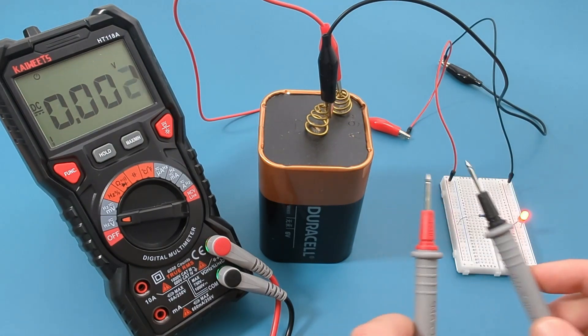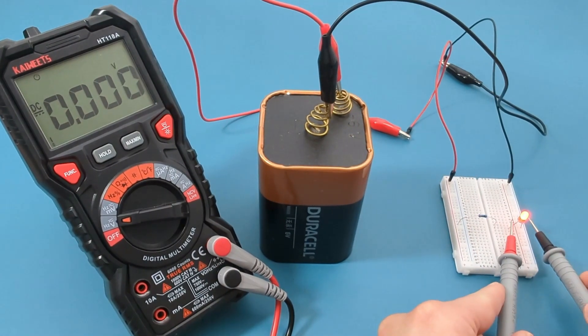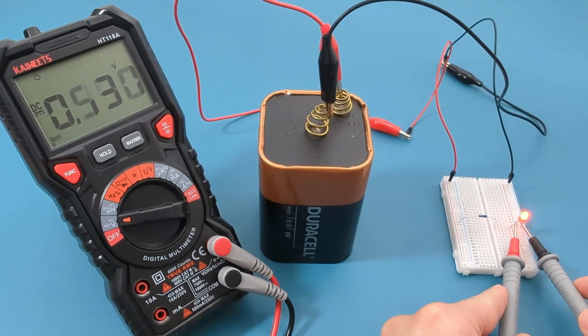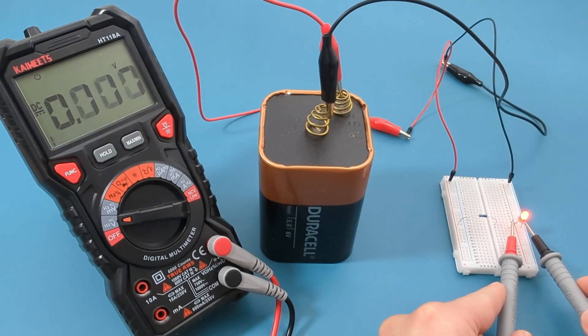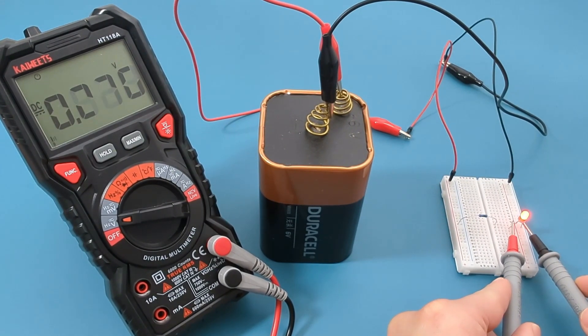Touch the probe leads to the red LED. The reading shows around 2 volts, which is what we expect for a red LED.